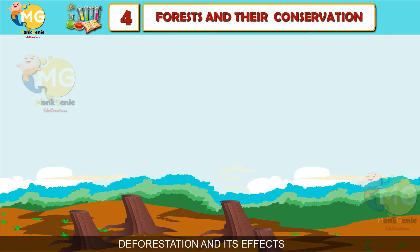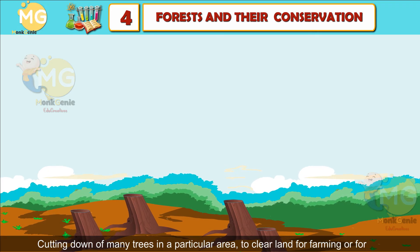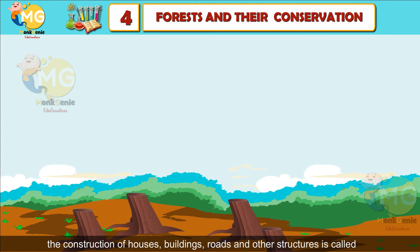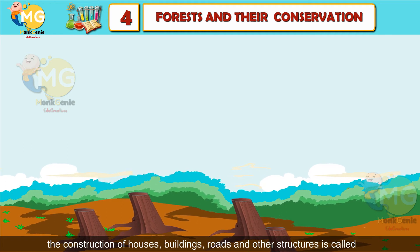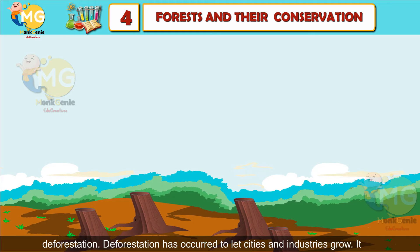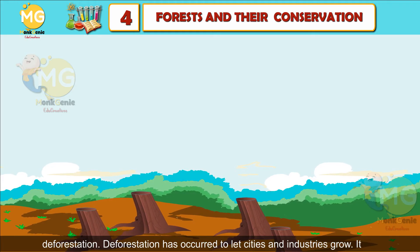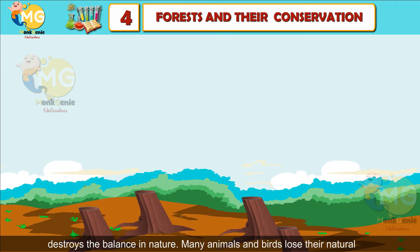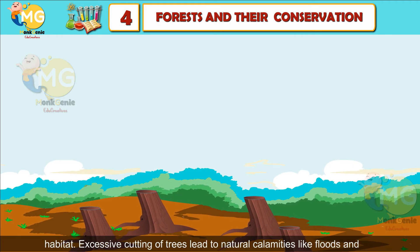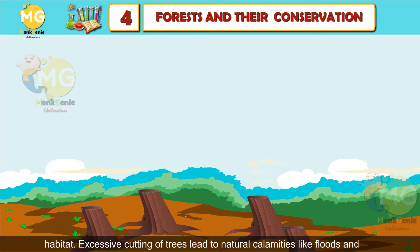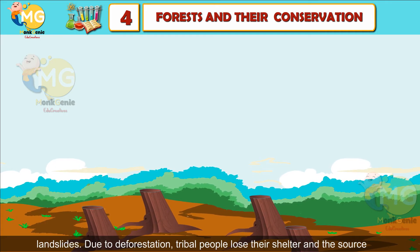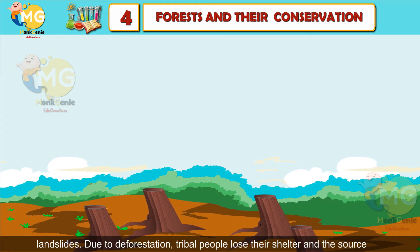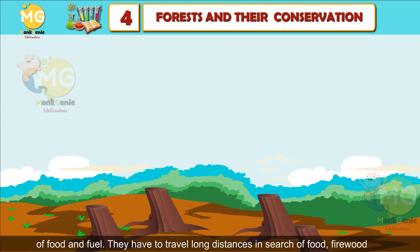This practice of cultivation is called Jhum cultivation. Deforestation and its effects: Cutting down of many trees in a particular area to clear land for farming or for construction of houses, buildings, roads, and other structures is called deforestation. Deforestation has occurred to let cities and industries grow, and it destroys the balance in nature. Many animals and birds lose their natural habitat, and excessive cutting of trees leads to natural calamities like floods and landslides. Due to deforestation, tribal people lose their shelter and the source of food and fuel.